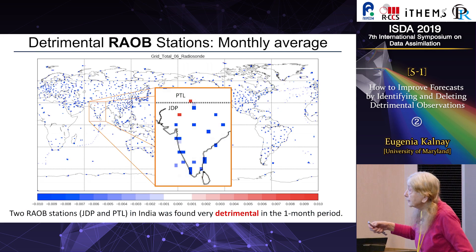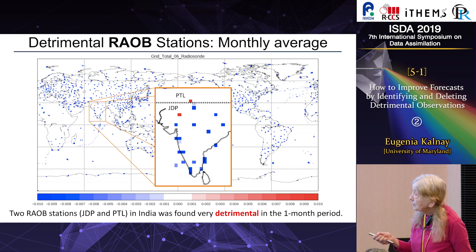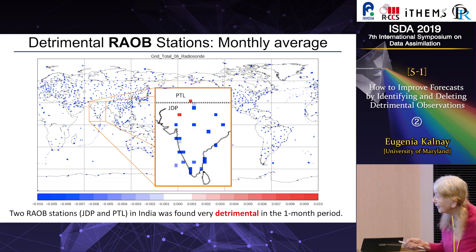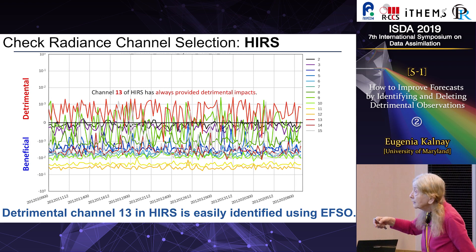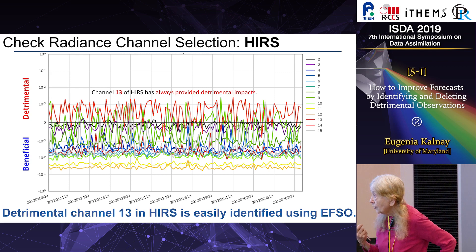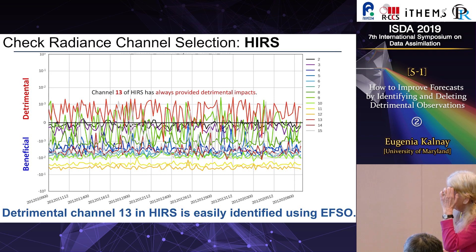This reflects the varying number of observations. As another example, all rawinsondes worldwide averaged over the month are on average strongly beneficial. However, in India there are two stations that, averaged over the month, are strongly detrimental. We can use this for checking different instruments like rawinsondes.